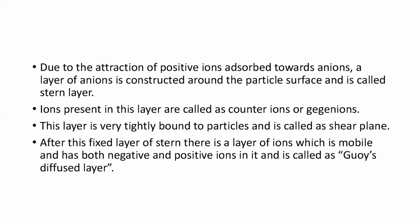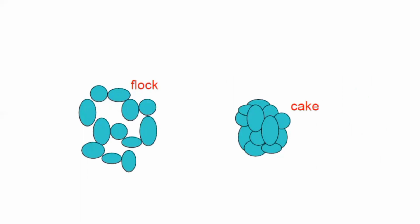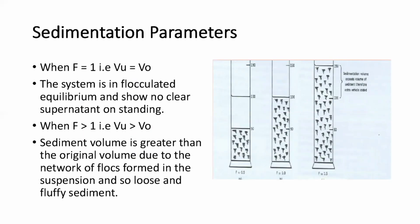The main difference between floccules and cake is that flocs have gaps — they are loose aggregations with free space — whereas cake is compact packing with no free space. Regarding sedimentation parameters: when F = 1 and V2 = V0, the system is in flocculated equilibrium with no clear supernatant. When F > 1 and V2 > V0, the volume of sediment is greater than the original volume, due to the loose and fluffy network of flocs formed in the suspension.